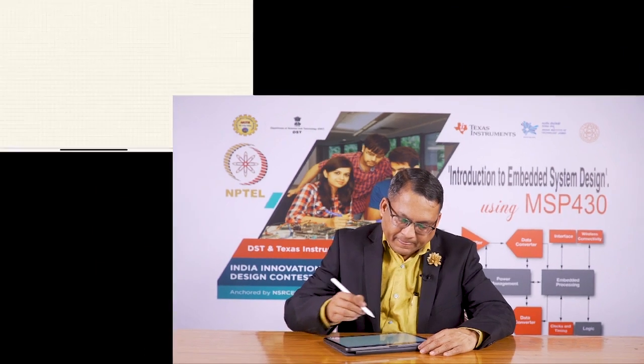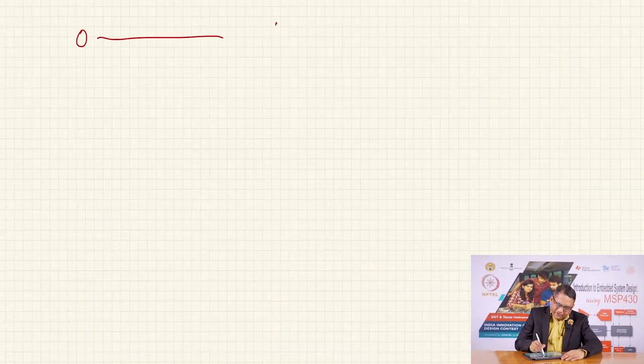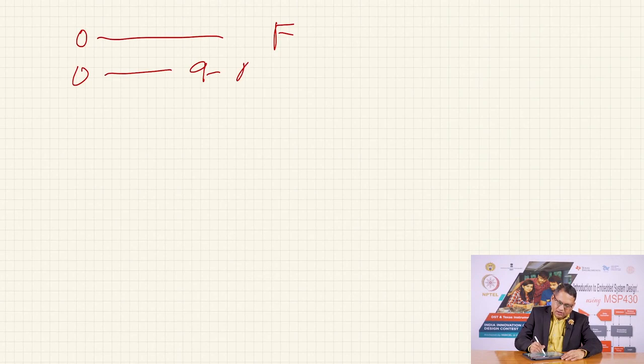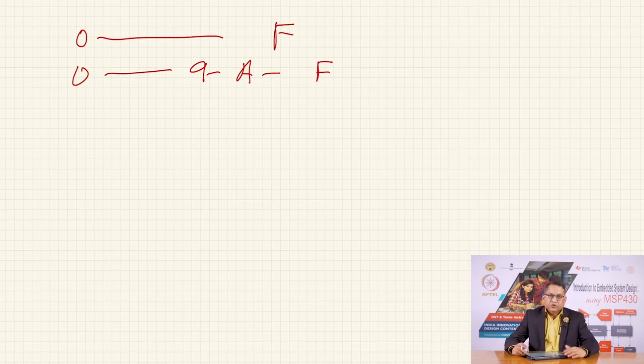Each time we press and release the switch it will count up the value from 0, 1, 2 up to the maximum. We are showing the count in hexadecimal fashion, which means we can display numbers from 0 to F — that is 0 to 9 and then A, B, up to F. This is what we are going to do in this exercise.